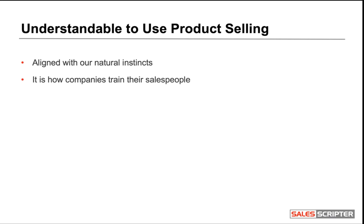It's also how most companies train their salespeople. Whether we're talking about new hires or periodic training, companies will often tell salespeople: these are the products you'll be selling, this is how they work, this is how they're priced, this is how you submit an order — here's your territory, now go out and sell. Or periodically: these are the new product updates, go generate leads for these new products. This is how companies train their salespeople, so it's understandable.